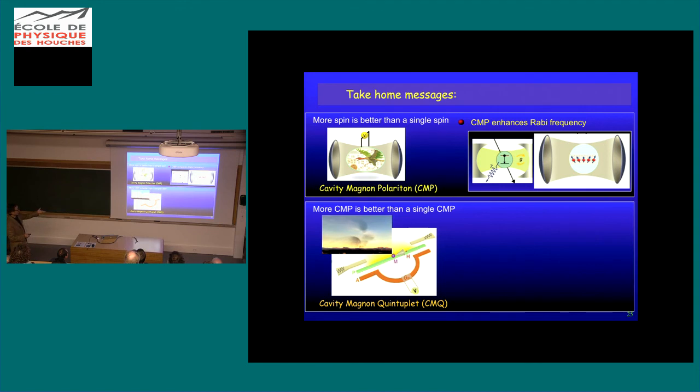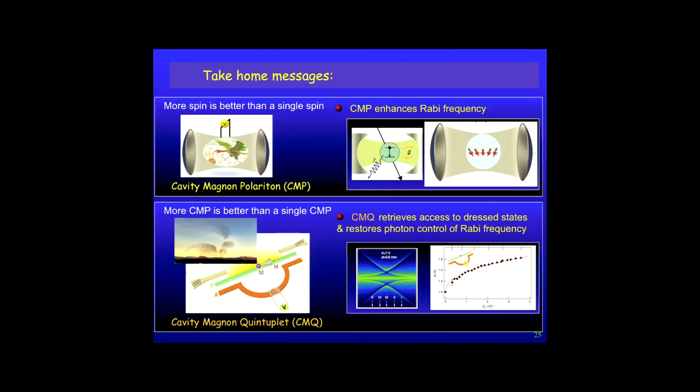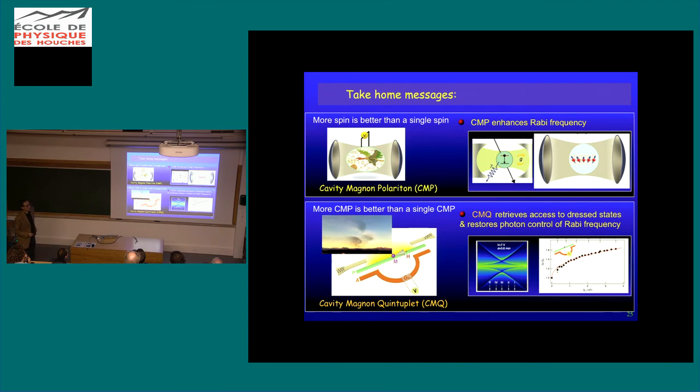And that seems to be, can be resolved if you, instead of using one cavity magnum polariton, you produce, you're using the dynamics of trillions of polariton direct, cavity magnum polariton by using this kind of feedback cavity technology, which we developed. And in this case, indeed, you can again restore the controllability of using microwave power or the photon number to control the magnum photon or spin photon coupling rate.